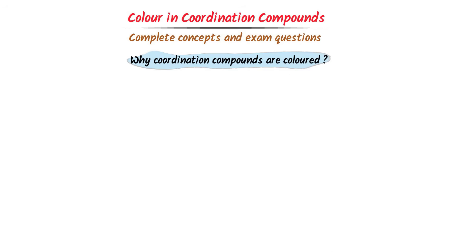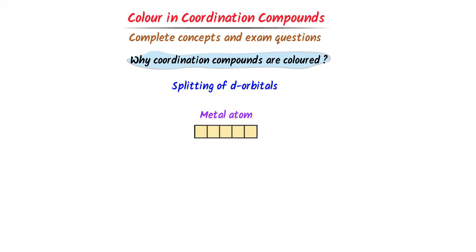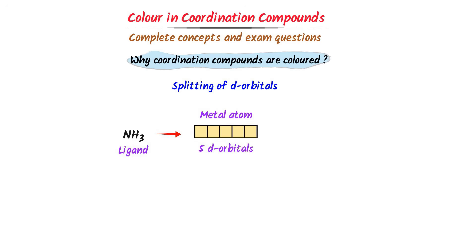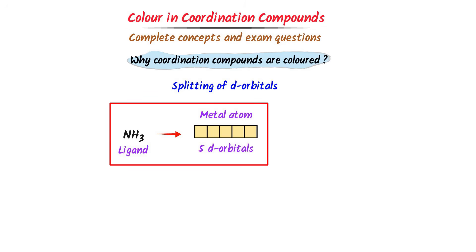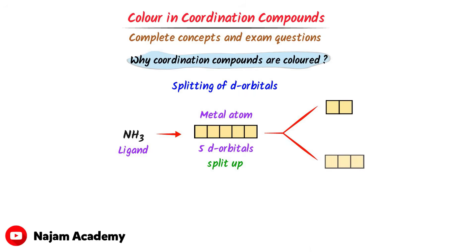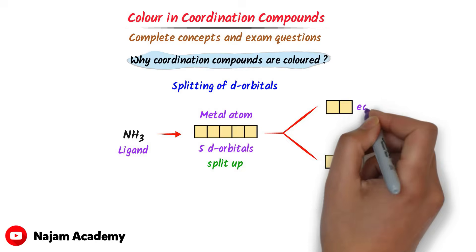To answer this question, we learn the splitting of d-orbitals. Consider a metal atom having 5 d-orbitals. When a strong ligand like NH3 is brought near it, there will be interaction between the NH3 ligand and the 5 d-orbitals of the metal. As a result of this interaction, the 5 d-orbitals split into two sets: T2G and EG.